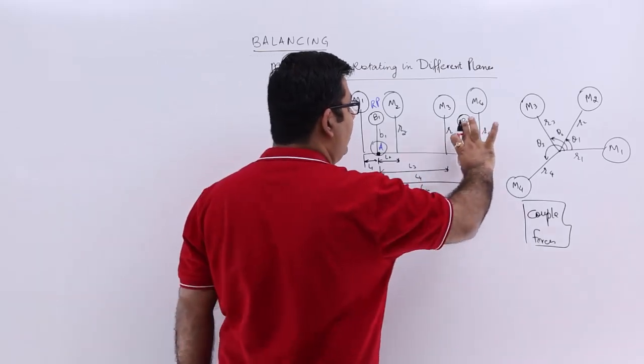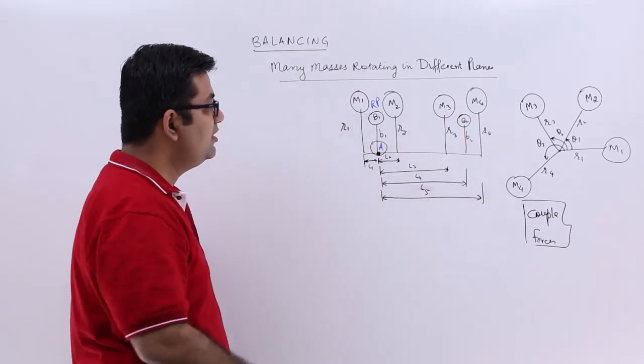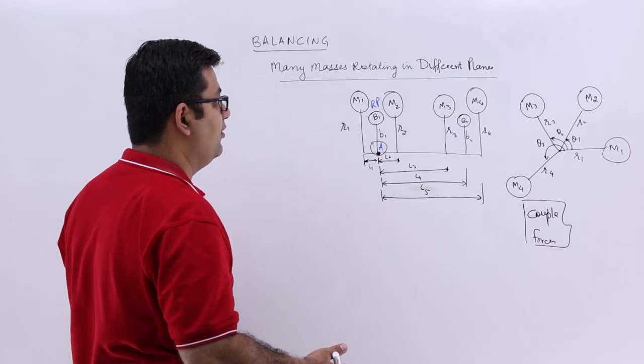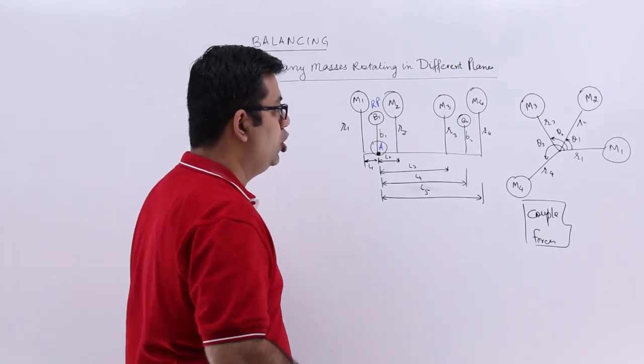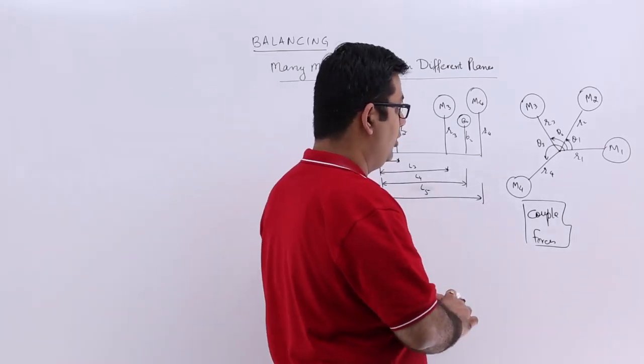And from that we can find out B2. So we will start with the couple polygon.